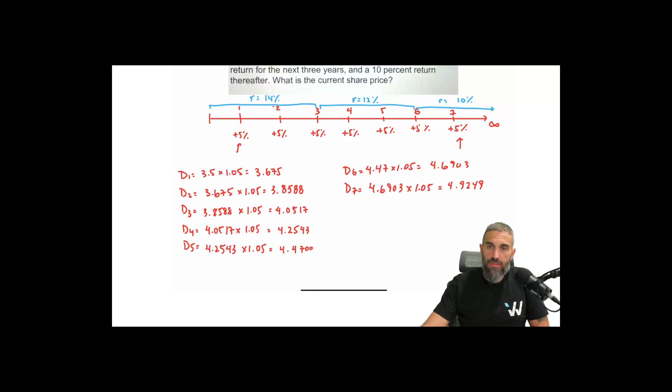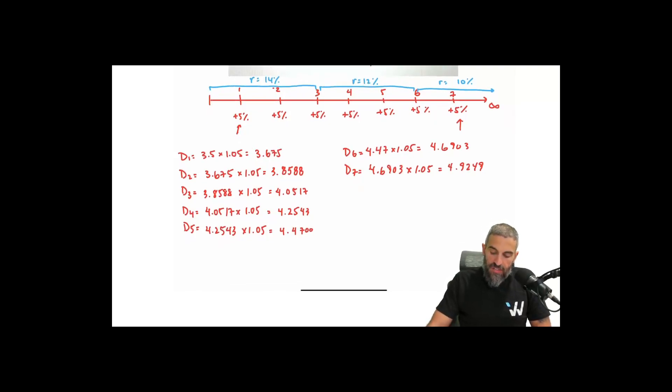So we found all of our dividends. What we're going to do now is starting from the right-hand side where we have the perpetuity. So over here, this dividend at time 7 is the first dividend for the perpetual portion of this cash flow. So I'm going to use that to find the present value at time 6. So I would take my dividend at time 7, so I'm basically doing this: Dividend at time 7 divided by rate minus growth rate. So 4.9249 over the rate of return, which is 10%, minus 0.05. So that is 98.498.